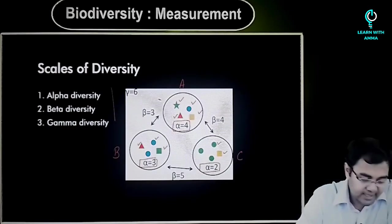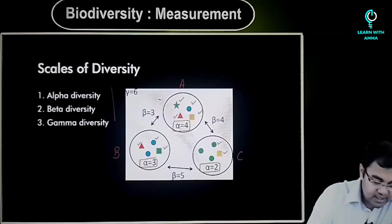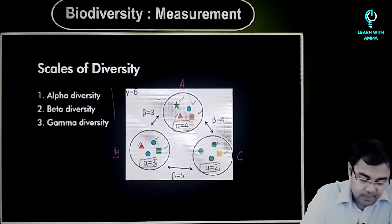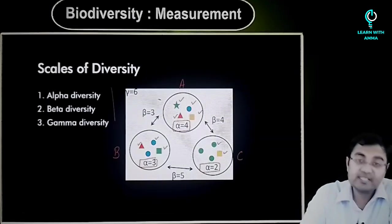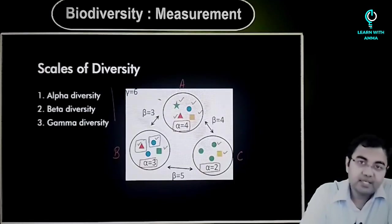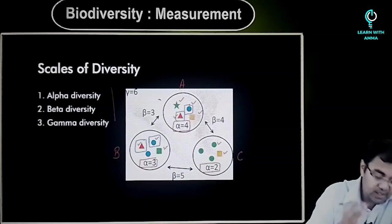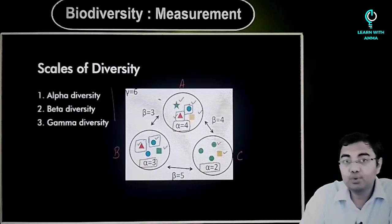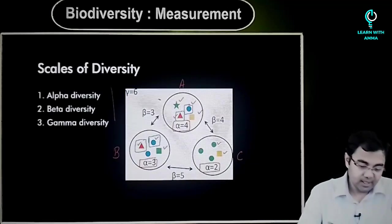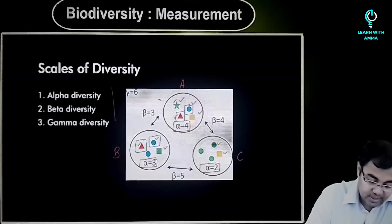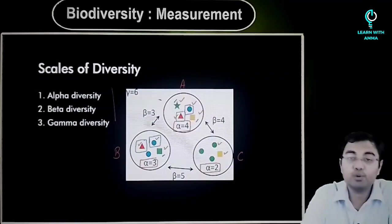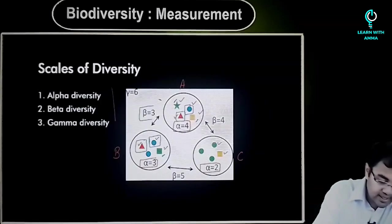Then comes beta diversity. Between sample A and sample B, beta diversity has been given as three. There are two species common in sample A and sample B — the red triangle and the blue circle. Beta diversity tries to look at different variants of species — the ones which are not common. The star is present only in sample A, the yellow square is present only in sample A, and the green square is present only in sample B. So that's why the beta diversity between A and B is three.